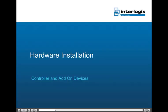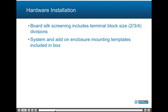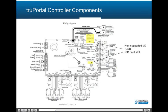This topic will cover the installation of the system controller and add-on devices. Board silk screening includes terminal block size divisions for easy identification of where the terminal blocks are to be installed. System enclosure and add-on enclosure wall mounting templates are included in packaging. The TruePortal system controller consists of a two-board design: the System on Module (SOM) board and the Input-Output (I-O) board. The SOM, the smaller mounted board, contains the main CPU and memory; the event log buffer and real-time clock are stored in battery-backed memory.